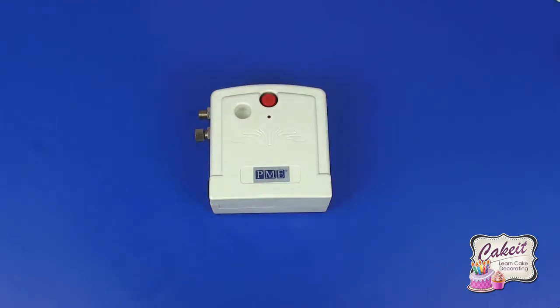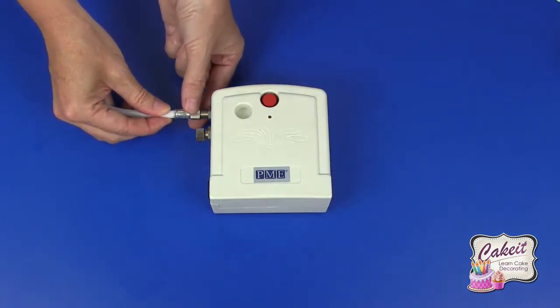I'm just going to turn that back round again and now we're going to attach the hose onto the section. So just line that up and twist that into position. Twist until it won't be able to tighten any further.